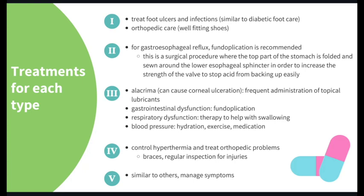For type 3, which can be the hardest to manage, one symptom is alacrima, which can cause corneal ulcerations, treated with frequent administration of topical lubricants like eye drops. Gastrointestinal dysfunction can also be treated with fundoplication. For respiratory dysfunction, therapy can help with swallowing issues, and for blood pressure issues, hydration, exercise, and medication are recommended. For type 4, managing hyperthermia and treating orthopedic problems with braces and regular inspection for injury is key. Type 5 similarly focuses on managing symptoms and inspecting for injuries, since the person may not be aware they are injured due to lack of pain perception.